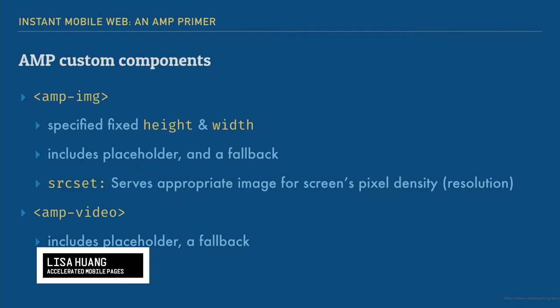They go a step further and use something called AMP custom components. With these custom components, the image tag is gone — we're using amp-image. The reason they created these custom components is the additional features they provide. In amp-image or amp-video, you have to specify a fixed height and width for your element, and include a placeholder, a fallback, and even something called a source set. Why? Because by parsing your HTML, the page knows exactly how the layout will look. It only needs to render once — you don't have to recalculate your layout, which saves time from painting and compositing as well.